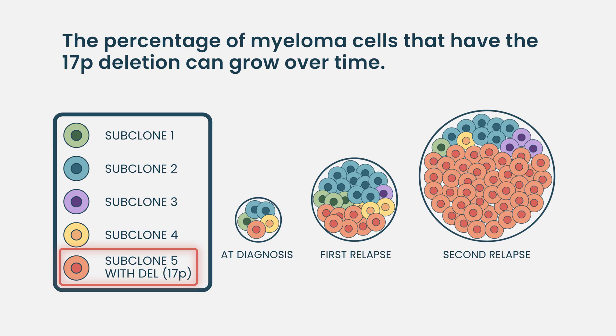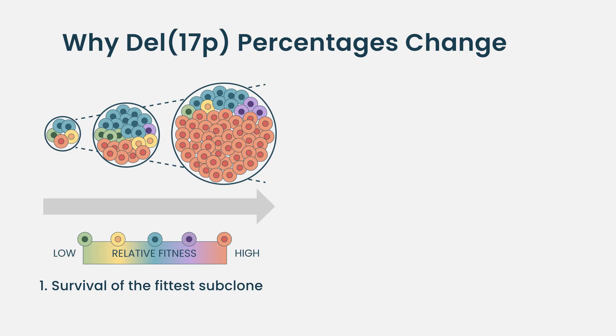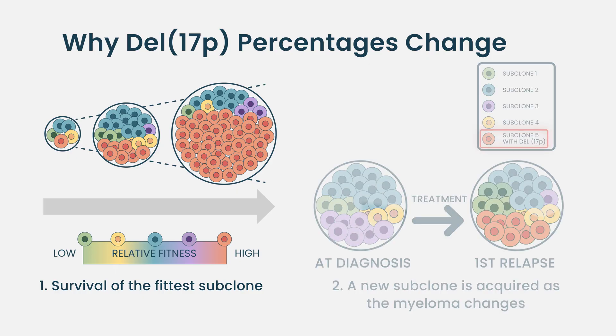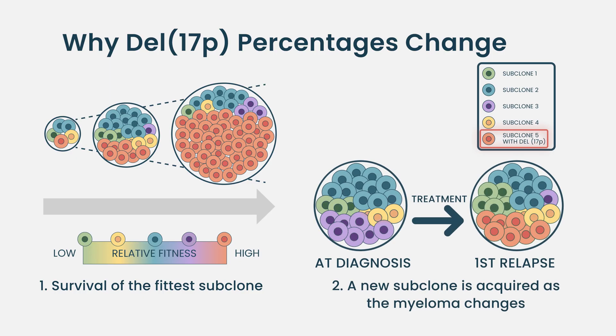Why might that be the case? Perhaps the initial therapy got rid of the cells that were easier to eradicate, but then the 17P population grew over time. Or perhaps the 17P deletion was acquired — something happened and changed within the myeloma cell, so it acquired a new mutation, and that's why it's growing.